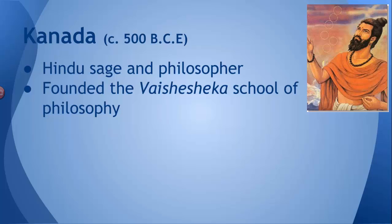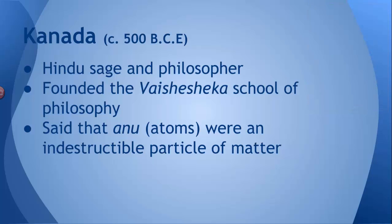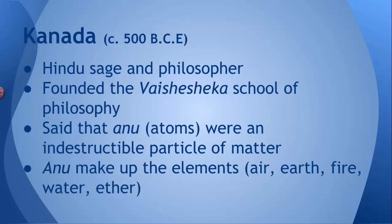And Kanada, among others, he was the first to actually write down about these things called anu, which are what we now know to be atoms. He believed that these anu were an indestructible particle that all matter was made of. And specifically, the four elements: air, earth, fire, and water, and then ether as well.